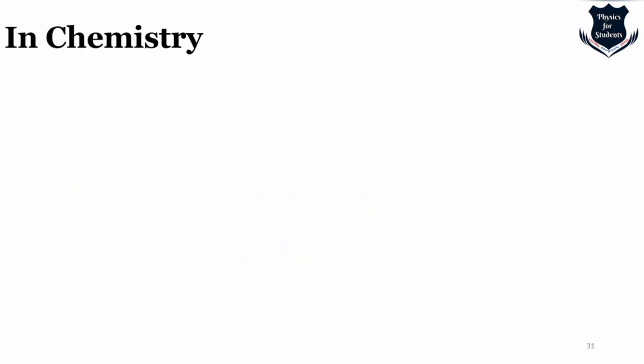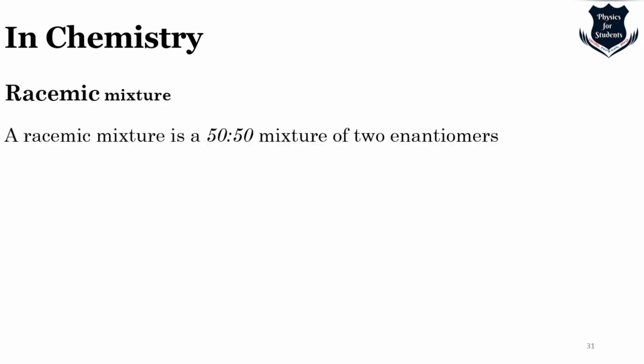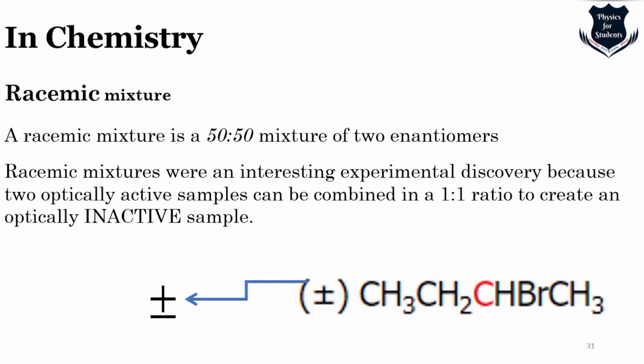In chemistry, the ± sign is also used. A notable example is a racemic mixture — a 50-50 mixture of two enantiomers, an interesting experimental discovery where two optically active samples are combined in a 1:1 ratio to create an optically inactive sample.